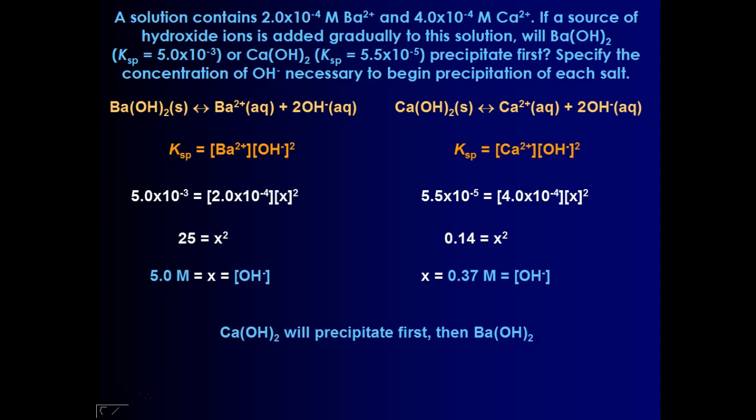So my hypothesis was supported because the Ksp value was a little bit smaller for calcium hydroxide. It was able to precipitate with a smaller amount of hydroxide than was the Ba(OH)2.